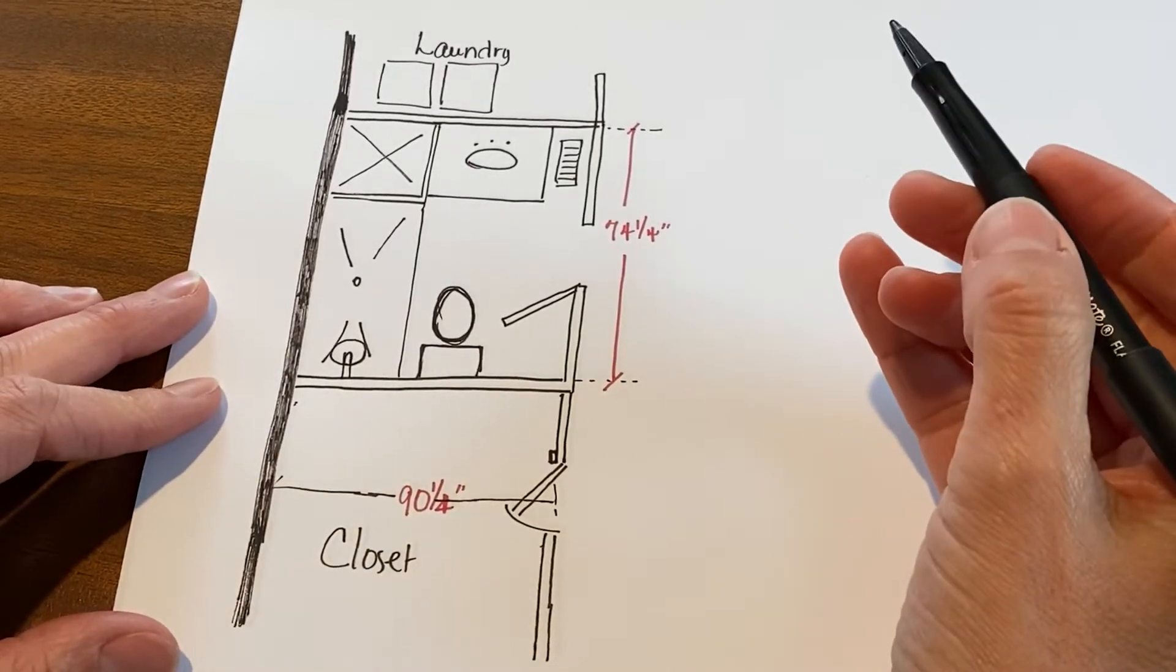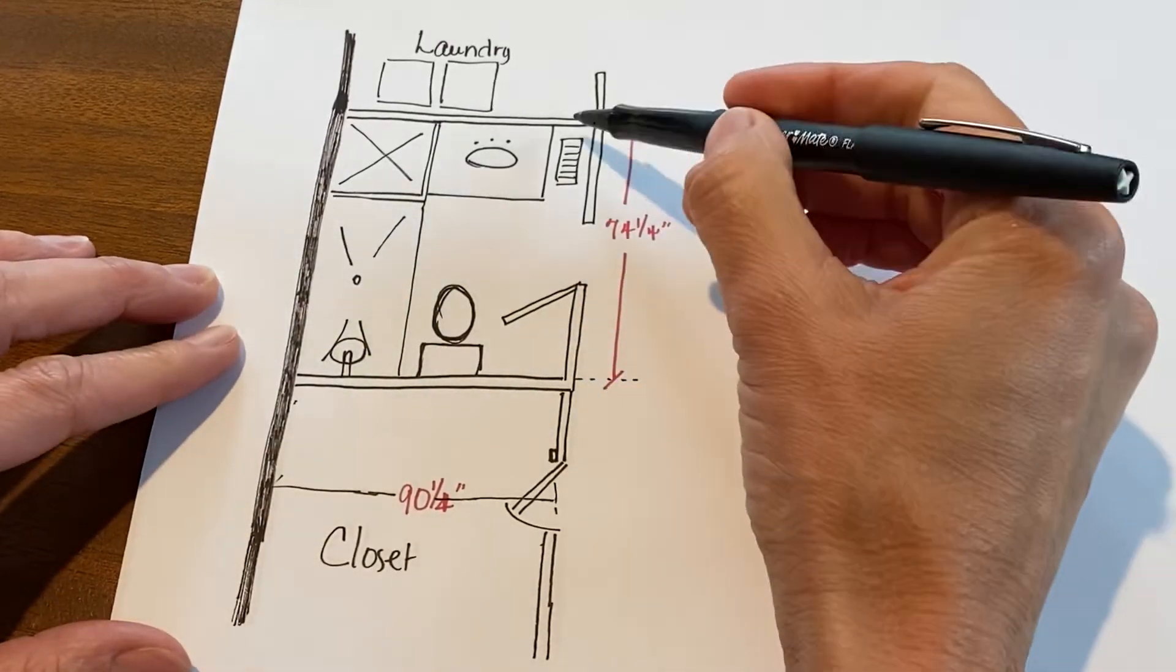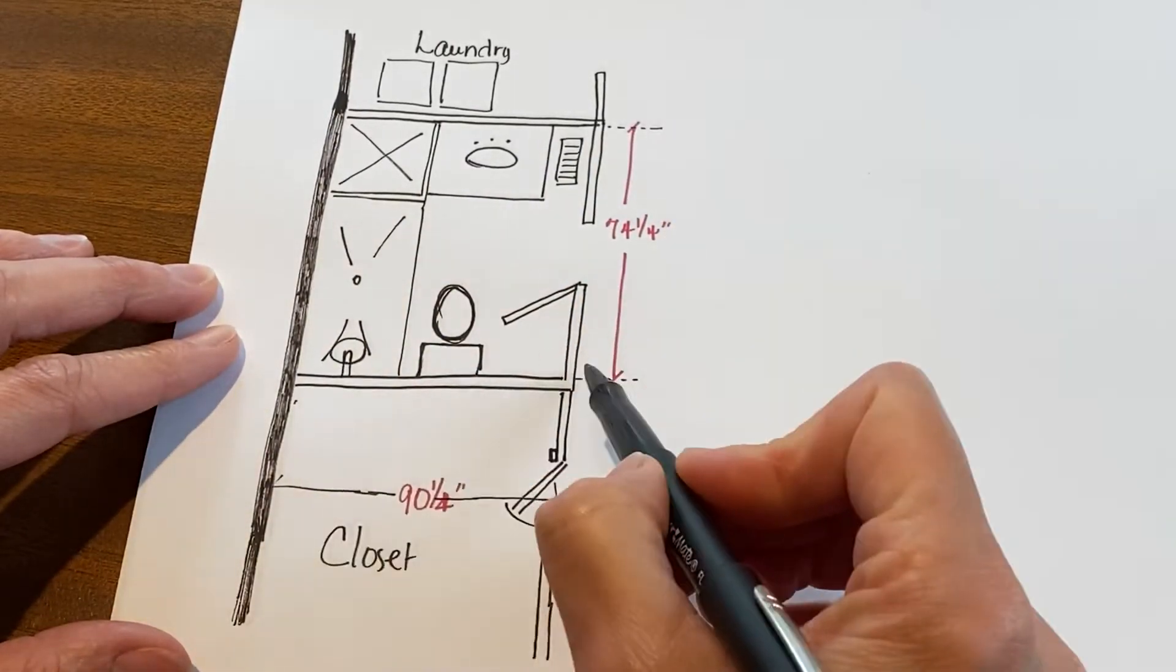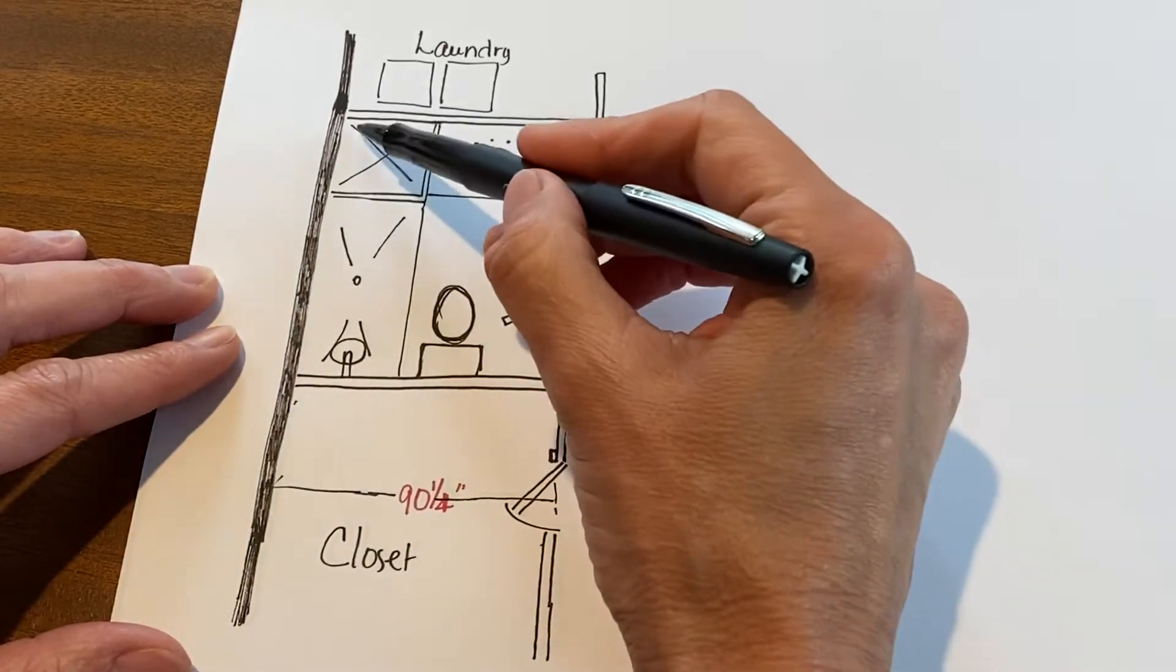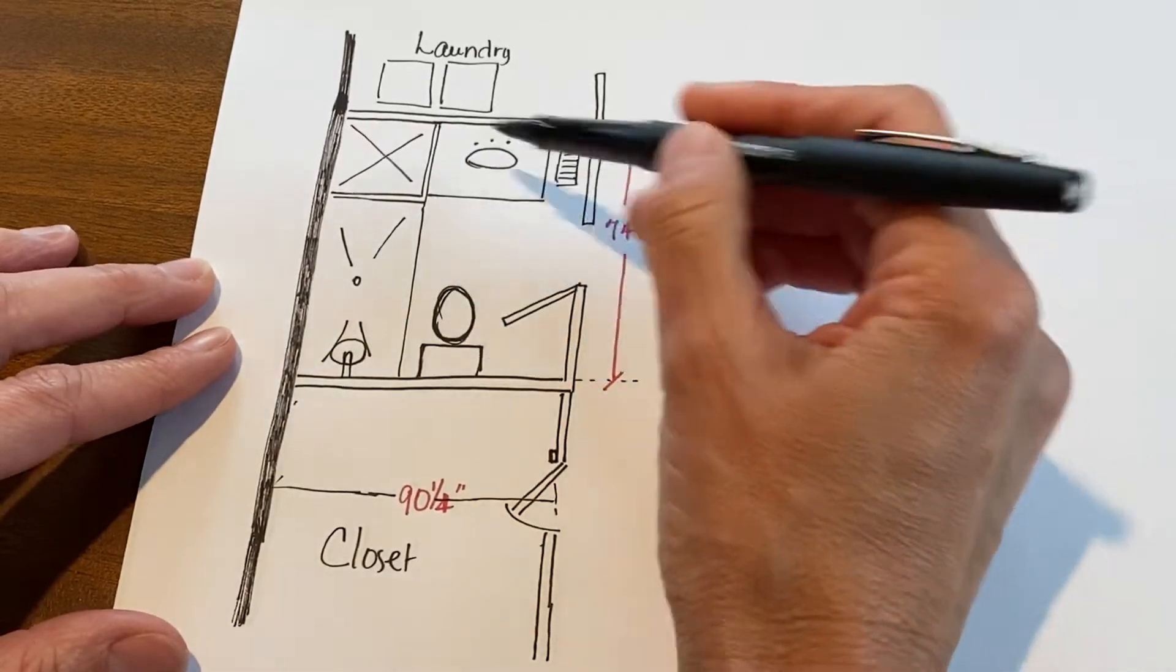Okay, so here's what we started with on Emily's bathroom. It had a very small footprint—74 inches this way by 90 inches this way—and this was wasted dead space, which really hurts when you have such a small footprint.